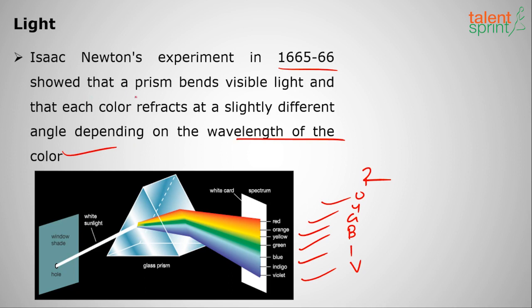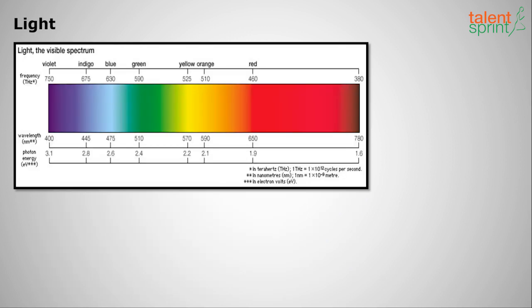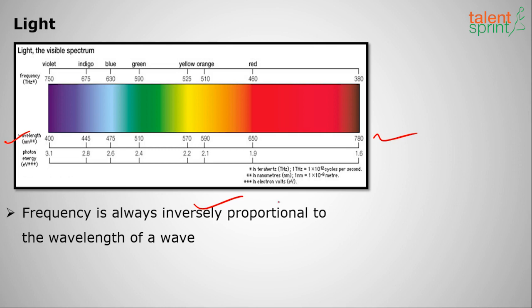When light passes through a prism, each color refracts at a different angle depending on its wavelength. The visible spectrum ranges from about 400 nm to 700–780 nm. Frequency is always inversely proportional to wavelength.